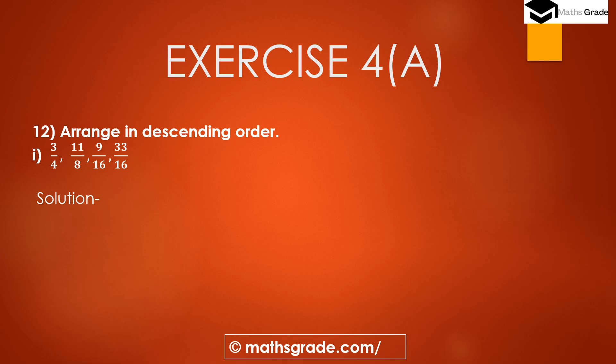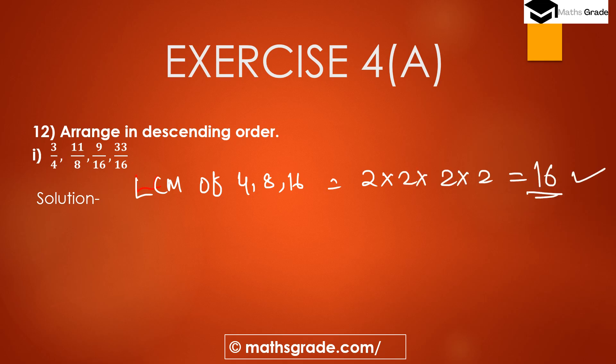Question number 12: arrange in ascending order. We have given the rational numbers and we have to arrange these rational numbers in descending order, that is from the greatest to the smallest. The given rational numbers are 3 by 4, 11 by 8, 9 by 16, and 33 by 16. First we have to find the LCM of these denominators: 4, 8, and 16. Now the prime factorization of 4 is 2 multiplied by 2, and 16 is 2 multiplied four times.